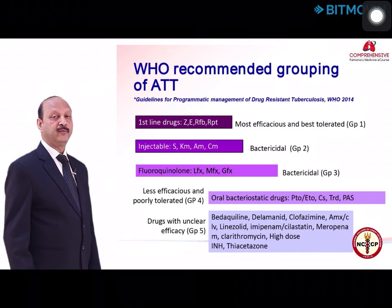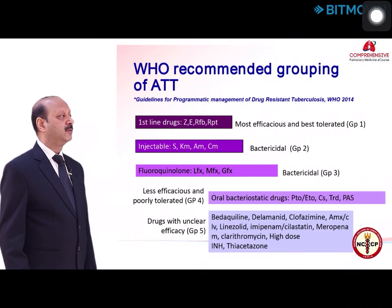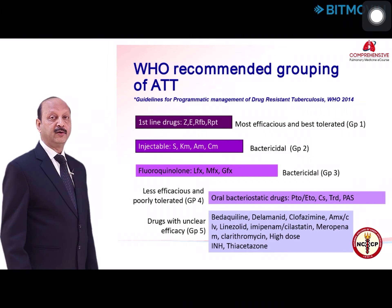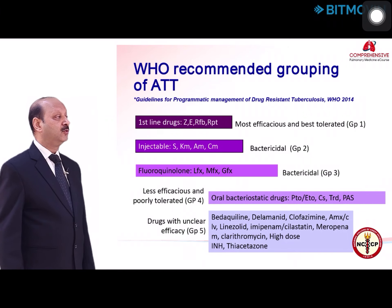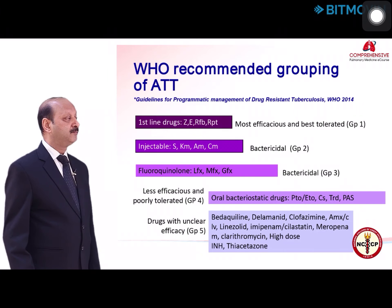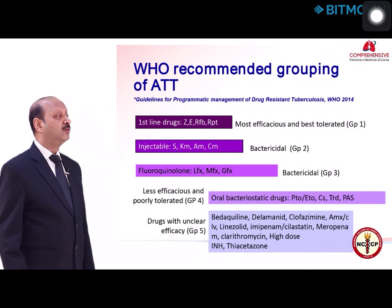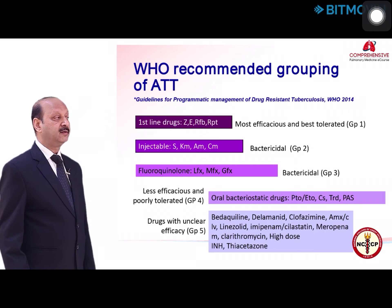The earlier WHO 2014 grouping included: Group 1 — first-line drugs; Group 2 — injectables (kanamycin, amikacin, capreomycin); Group 3 — fluoroquinolones (levofloxacin, moxifloxacin, gatifloxacin — note ciprofloxacin is no longer recommended as it is inferior to third- or fourth-generation quinolones); Group 4 — oral bacteriostatic drugs including prothionamide, thionamide, cycloserine or terizidone, and PAS; Group 5 — drugs with unclear efficacy including bedaquiline, delamanid, clofazimine, amoxicillin-clavulanate, linezolid, imipenem-cilastatin, meropenem, clarithromycin, and high-dose INH.